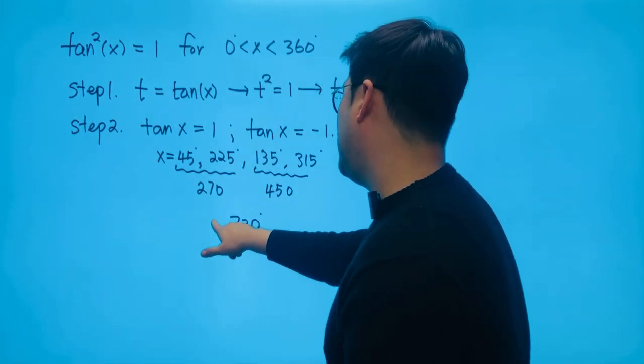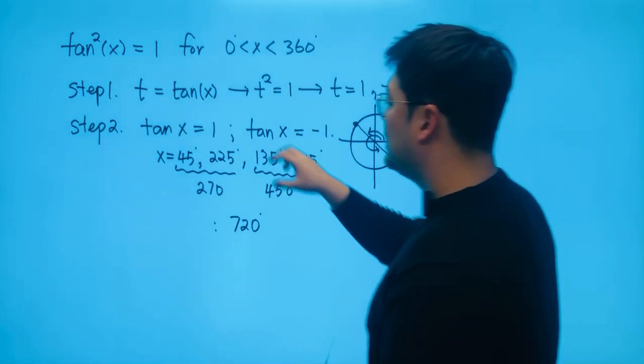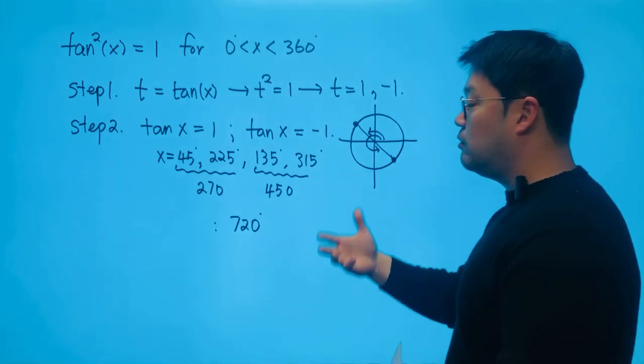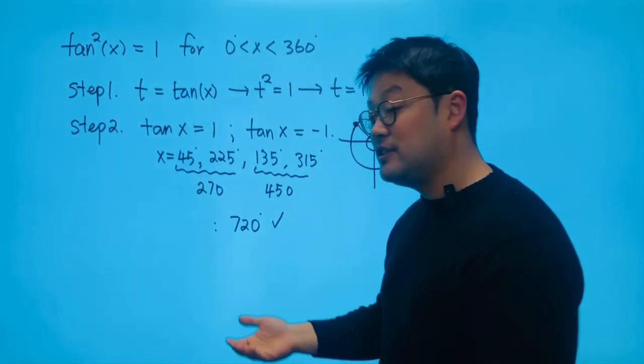And yes, it makes sense. Why? Because 45 plus 315 becomes 360. 225 and 135 also becomes 360. So adding it up, we get 720. And that becomes the answer.